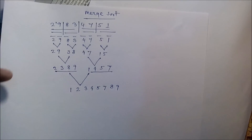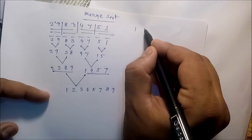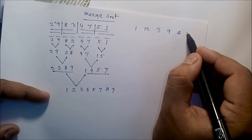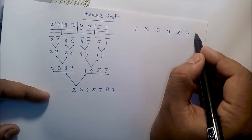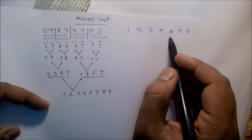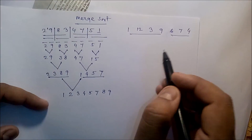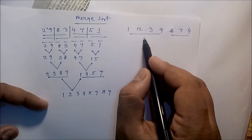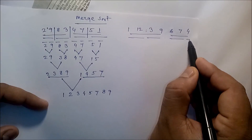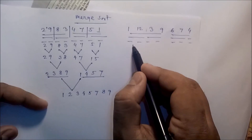Let's take another example. Suppose the data is: 1, 12, 3, 9, 6, 7, and 4. Divide this data into two equal parts — this half and this half. Then divide each part again into two equal parts, continuing until we have individual elements.